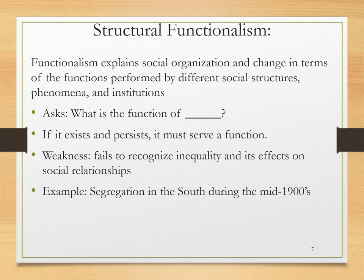A weakness of structural functionalism is that it fails to recognize inequality and the effects of inequality on social relationships. That is one of the major reasons why we have three core sociological perspectives, because that element of failing to recognize inequality is very heavily picked up by conflict theory. An example of structural functionalism could be segregation in the South during the mid-1900s — an example of the weakness of structural functionalism's inability to account for a social structure that existed over quite an unfortunately long period of time in the United States.